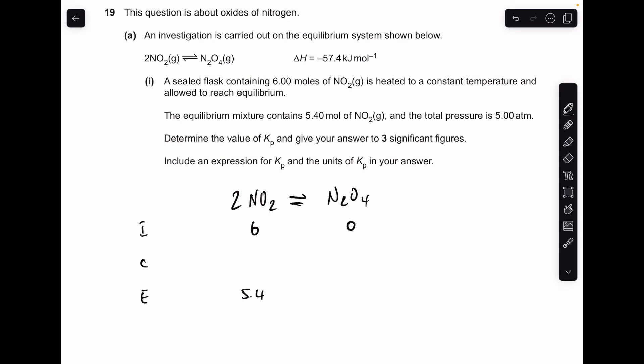So I'll put minus 0.6 there. And then we'll apply that mole ratio across. So if 0.6 moles of NO2 has been used, then the amount of N2O4 that's going to be produced will be half that.